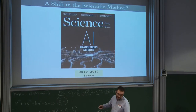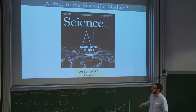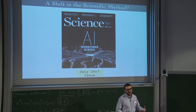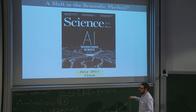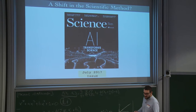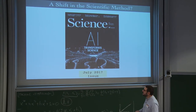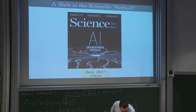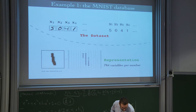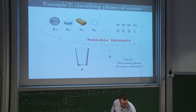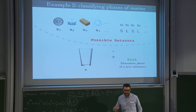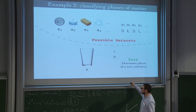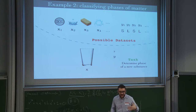People have started wondering whether having a machine that solves problems for us will transform the scientific method itself. We are not there yet, but this approach is being applied to condensed matter. One of the first recent applications was using supervised learning — minimizing a loss function — to identify phases of matter. The input is images or configurations of different objects, and the goal is to classify whether the input is in a given phase, for example solid or liquid.